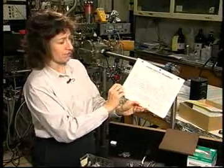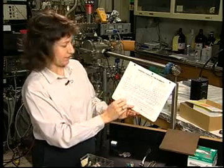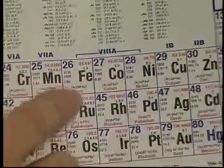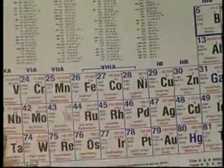If I look at the periodic table, there are lots and lots of elements in here. But in fact, there's only a few that are actually magnetic. There's a little group right up here, iron, cobalt, and nickel, that are magnetic.